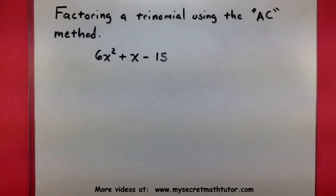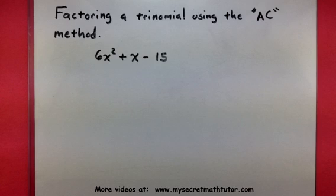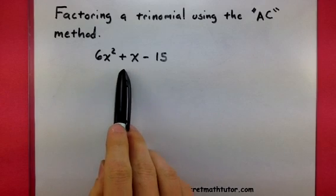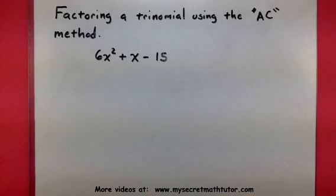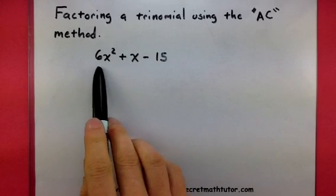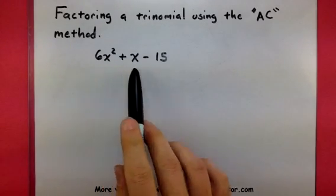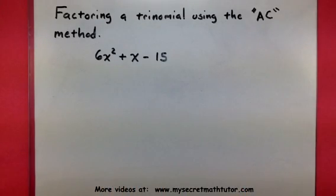Welcome to My Secret Math Tutor. In this example, I'm going to show you a very interesting factoring technique known as factoring using the AC method. This is basically used for trinomials or polynomials that have one, two, three terms. This is a great method and it works best if there's an actual coefficient on your x squared, as long as the numbers aren't too large.